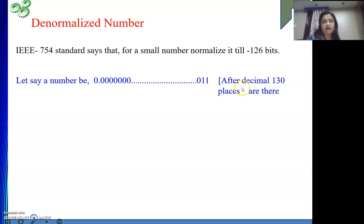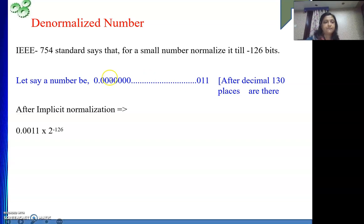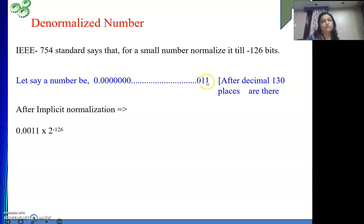Say my number has 130 places after the decimal. If I bring the decimal point to fully normalize, it would go 129 places, but I can only go up to 126 places. So 129 minus 126 means 3 more places remain. So the number becomes 0.0011 — because I bring it 126 places to the right, leaving two zeros before 011. So this is the maximum possible normalization for a smaller number.